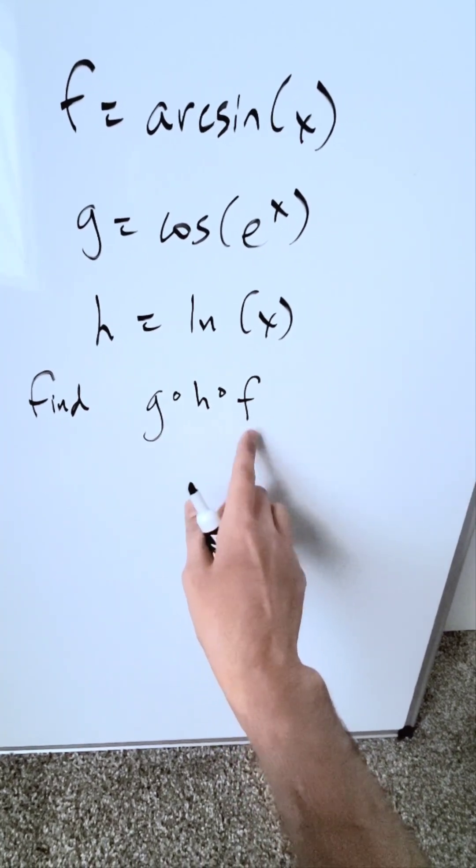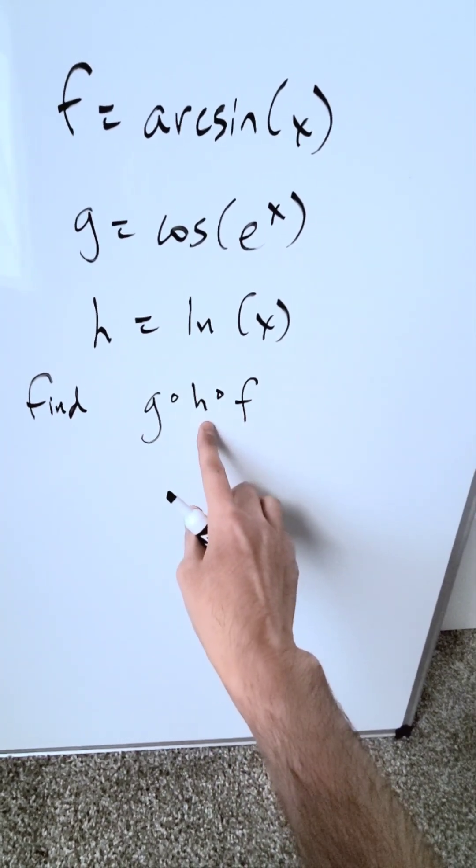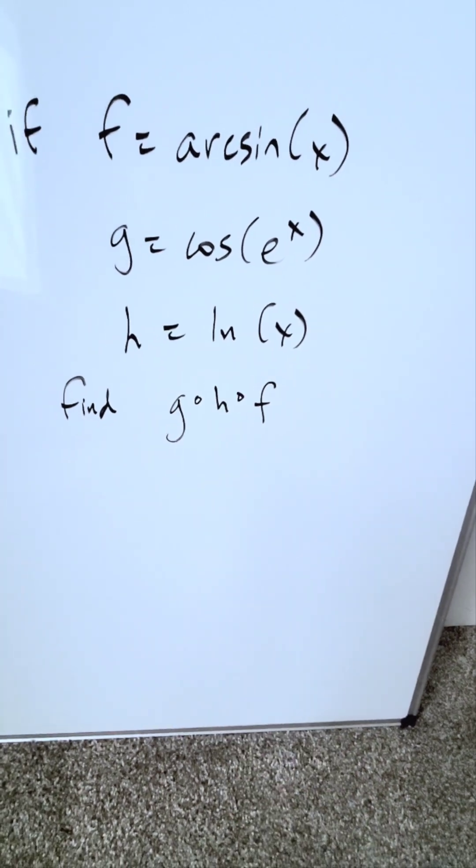I have to evaluate g∘h∘f. The f function is fed into the h function, then that result is fed into the g function. How would we do it?